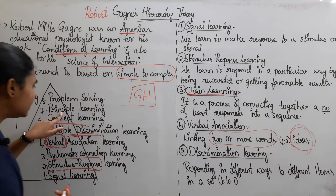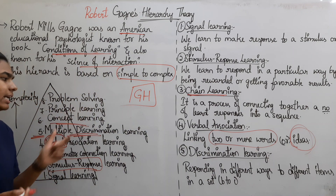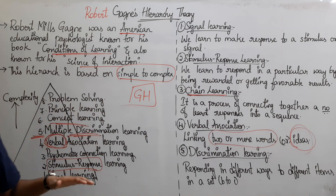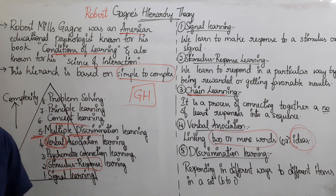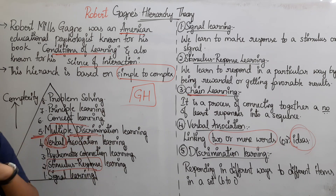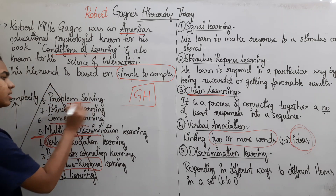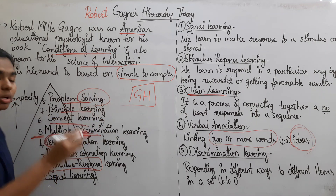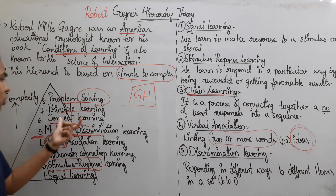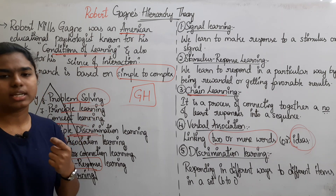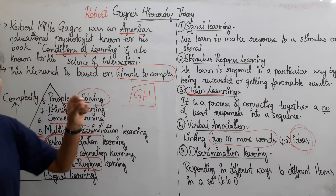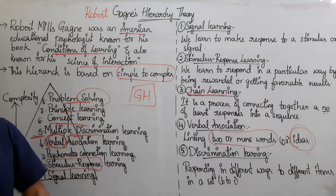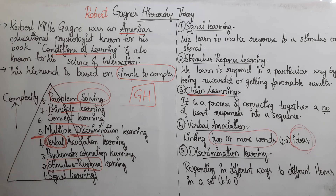Next is Principle Learning, the seventh stage. Here you need to apply rules — for example, traffic signals and rules in our society. You need to use principles and apply them in real life.